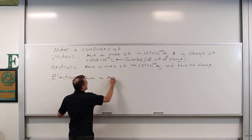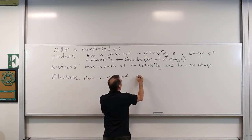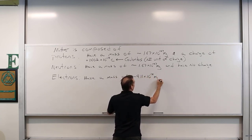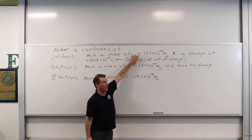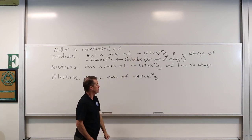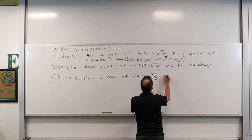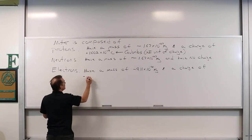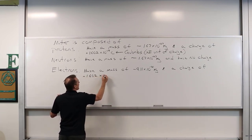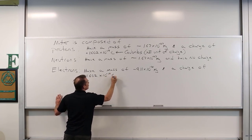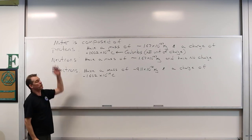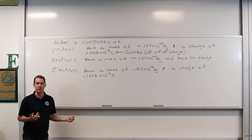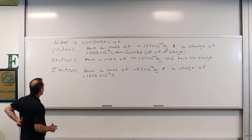Electrons have a mass of approximately 9.11 × 10⁻³¹ kilograms — a lot less massive than protons. They have a charge of −1.602 × 10⁻¹⁹ coulombs. Electrons and protons have the same amount of charge, just opposite. That's why electrons are attracted to protons and orbit them — they're attracted to one another.